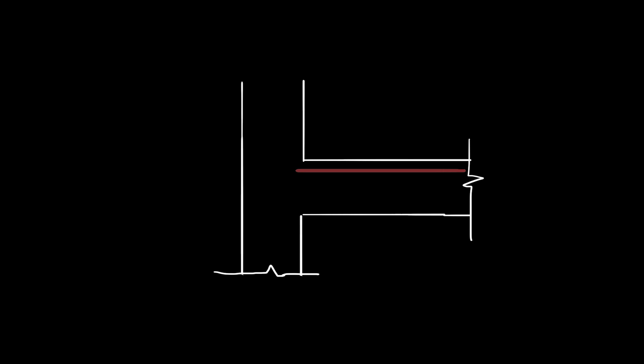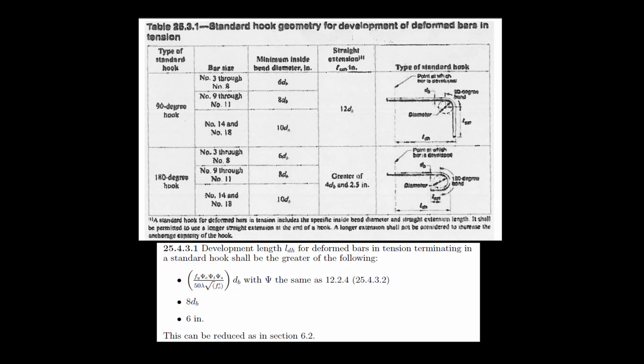In some cases however, no matter how small the bars we use, there is not enough room to develop the flexural reinforcement's yield strength. To deal with this, we use hooks and bends. Table 25.3.1 and clause 25.4.3.1 summarizes their use nicely.